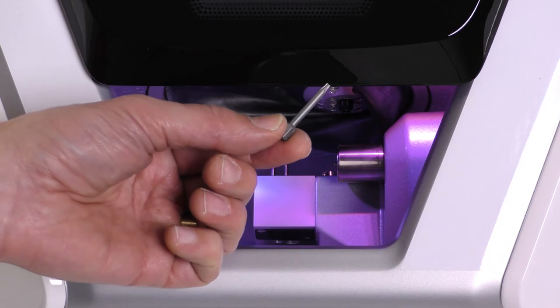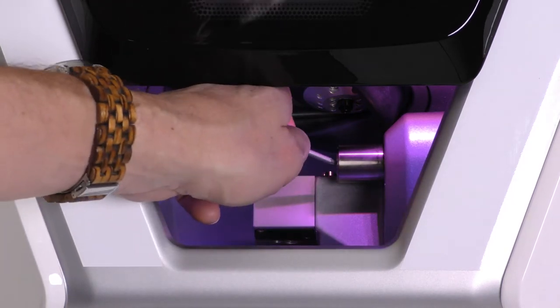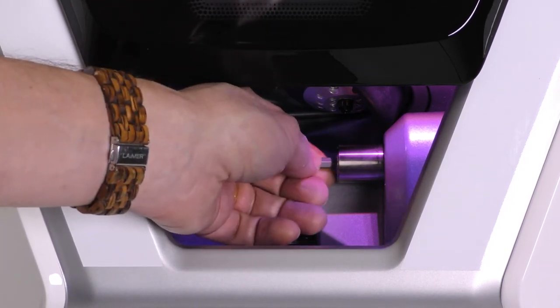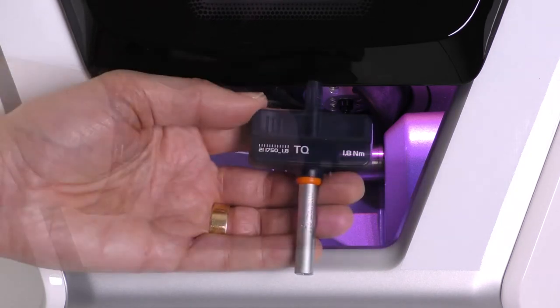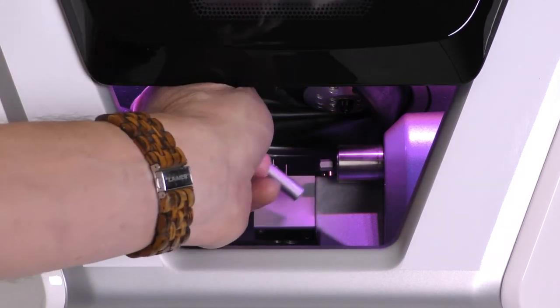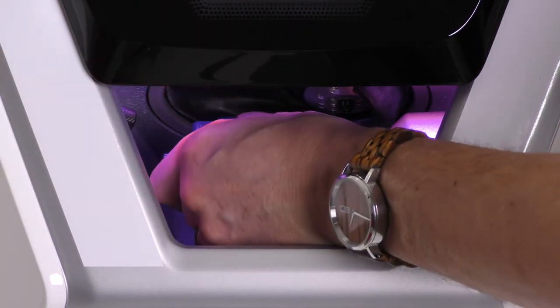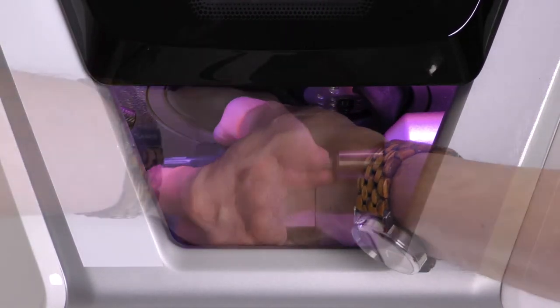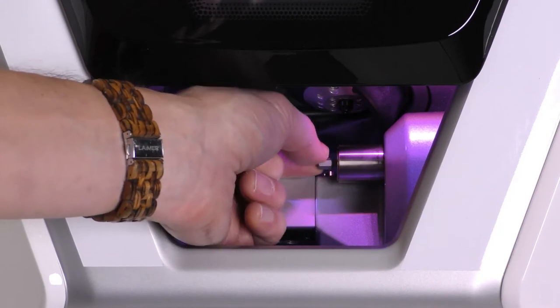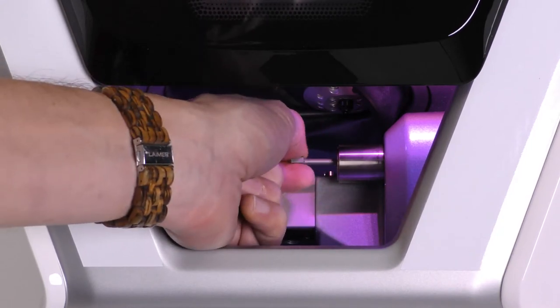Insert the bit of the torque screwdriver into the collet chuck and hold it in place. Put the torque screwdriver on the bit and loosen the screw by twisting the torque screwdriver counter-clockwise.